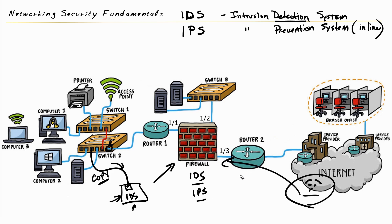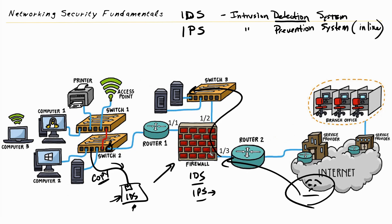If we implement IPS on the firewall, imagine a hacker out on the internet trying to compromise our servers. With IPS enabled, the firewall looks at the traffic, sees that it's malicious, and goes ahead and stops the attack right there — not letting it get through to the servers. That is intrusion prevention.